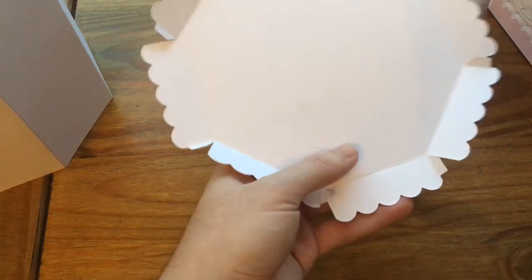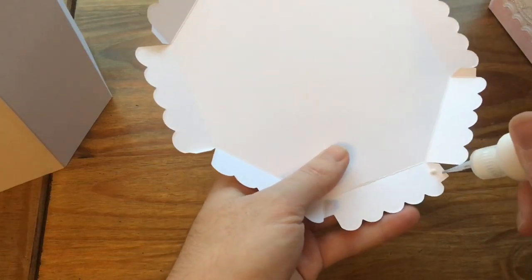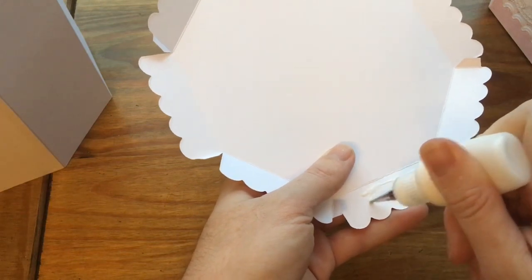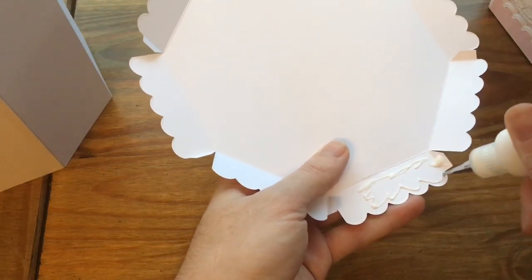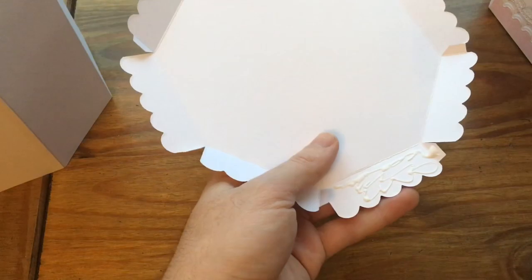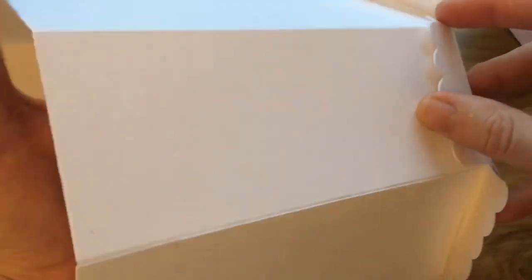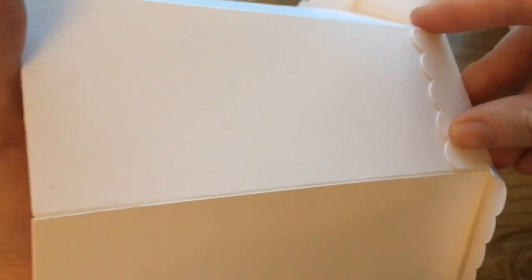So first thing I'm going to do, I'm going to put glue on one of the little tabs and then glue up to the last scallop. Then take in the sides, stick this down, and the tab tucks neatly over. Hold it till it's dried.